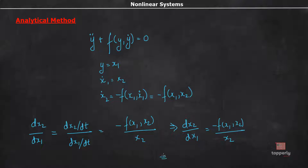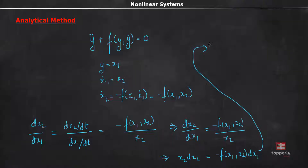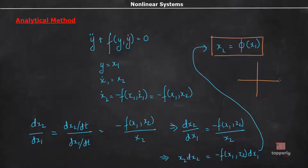If we cross multiply the terms, we get x2 dx2 equal to minus f(x1, x2) dx1. Now if we integrate on both sides, we get the equation as x2 equal to some function of x1. This equation, when plotted on an x1-x2 plane, gives the phase trajectories. For example, suppose x2 equal to x1 — that is, phi of x1 written as x1 itself — then the phase trajectory is given by this line.